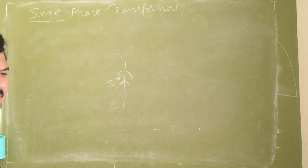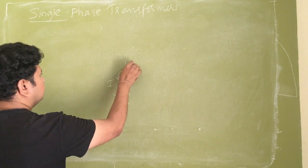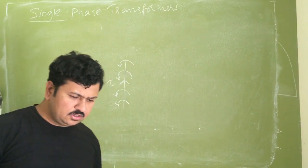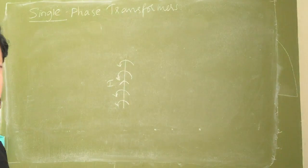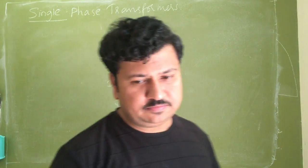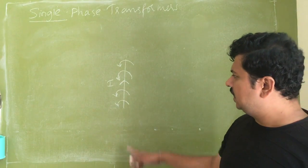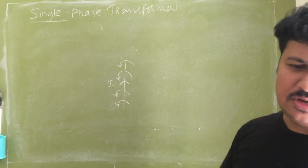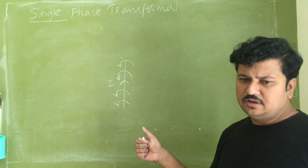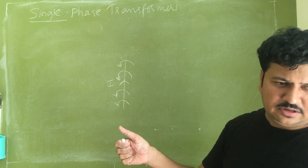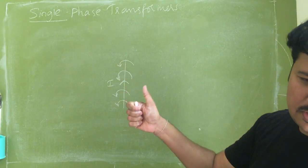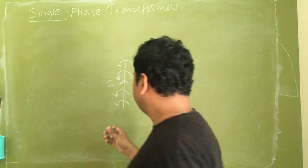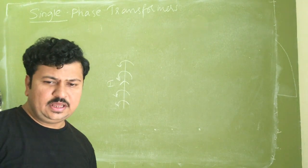The direction of that flux is given by the right-hand thumb rule. If I hold a conductor such that the direction of the thumb indicates the direction of current flow, then the direction of the other fingers indicates the direction of flux. This is the right-hand thumb rule. You studied this in 12th standard under the topic 'magnetic effect of electric current' — whenever a current is carried by any conductor, that conductor creates magnetic flux surrounding it, and the direction is given by the right-hand thumb rule or cork-screw rule.